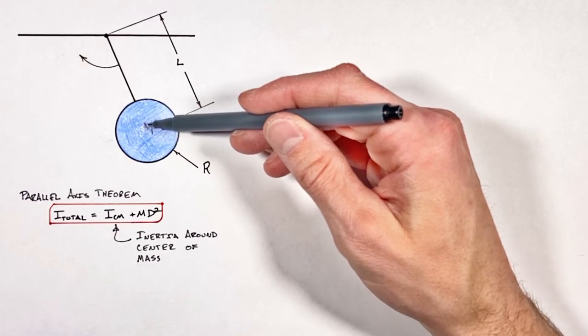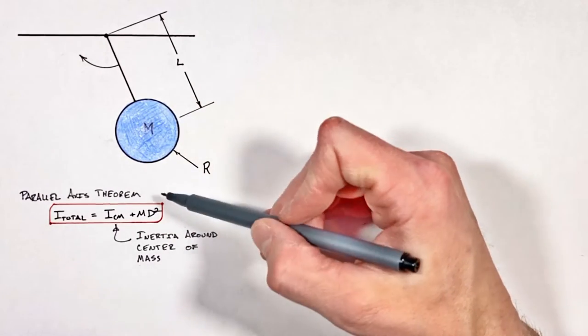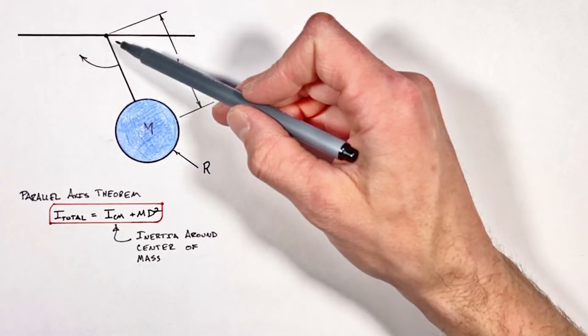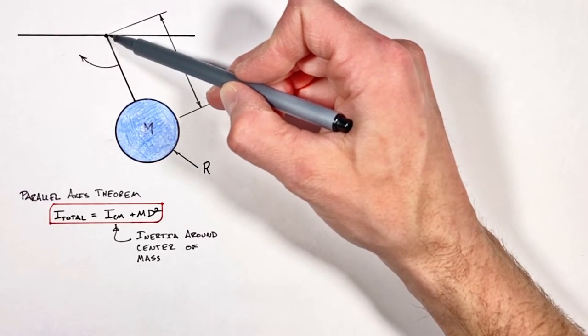Now anytime something rotates around an axis which doesn't pass through its center, we're gonna need to use the parallel axis theorem. And to better understand this, I want to take this rotation of this cylinder around this point up here